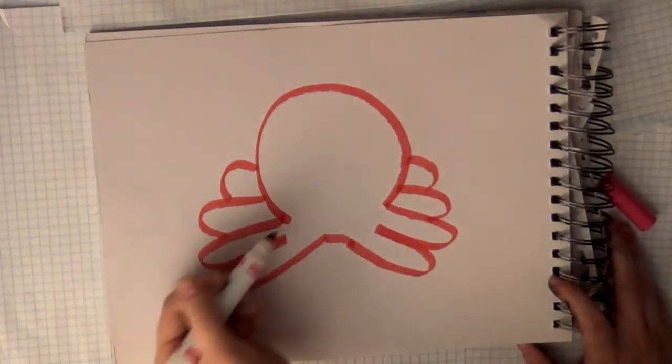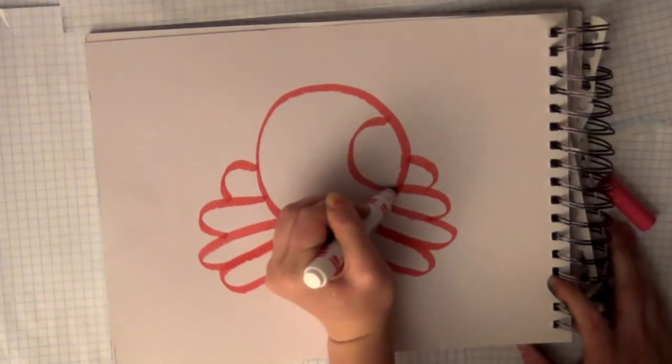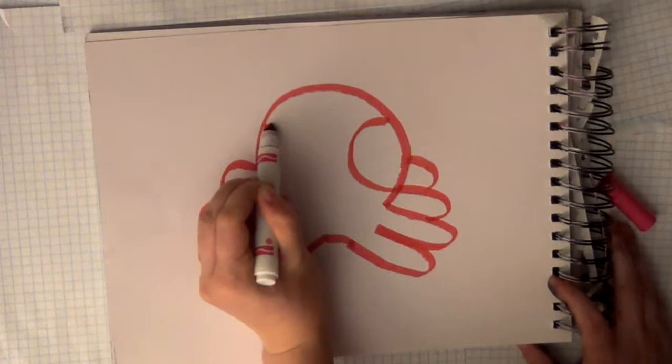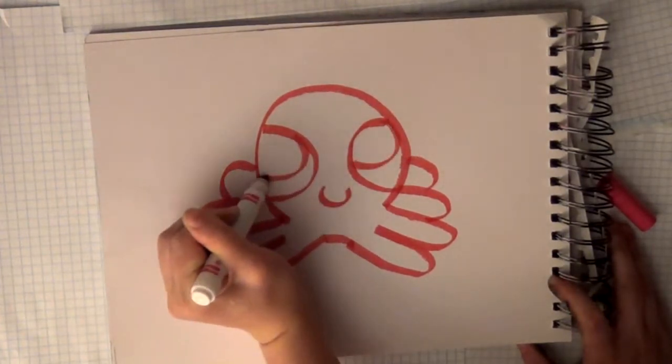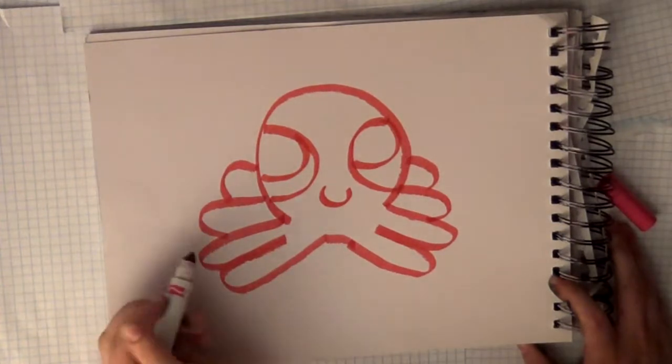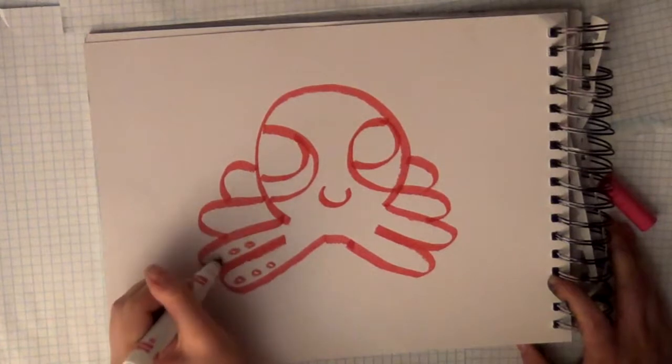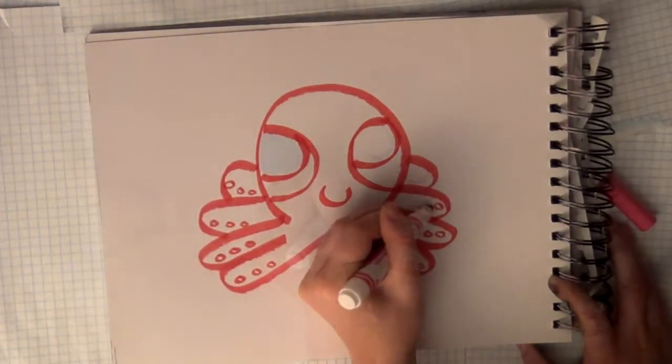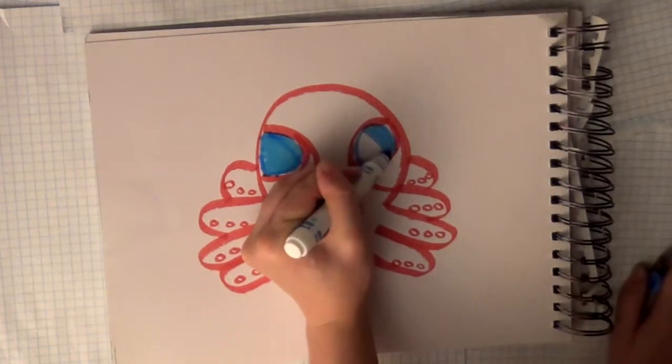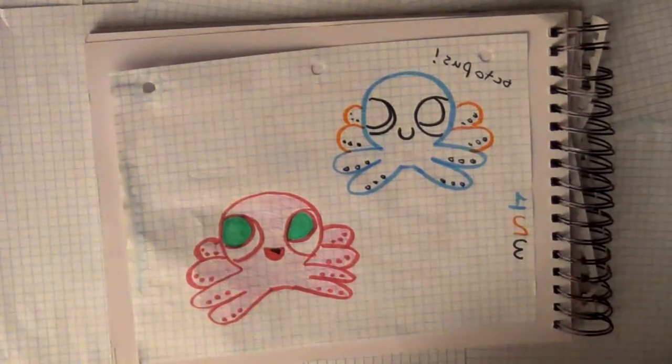You want to add in the details like his face with a smile and eyes. You have to give him the circles on the bottom of his feet. And that's how to draw a little baby octopus.